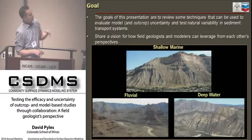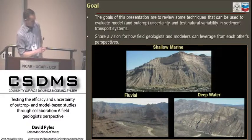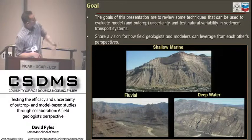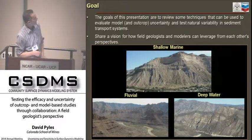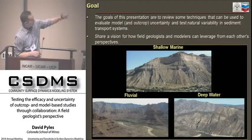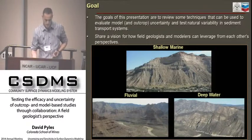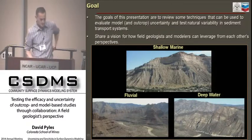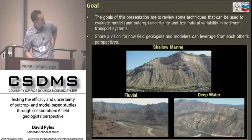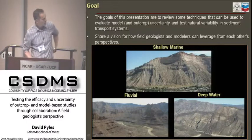I'll show some neat images of field areas. Up top is the Book Cliffs, a great outcrop in Utah. Down in the bottom left is the Wasatch Formation in Utah. And this is a great example of a deep water system we're working in California.